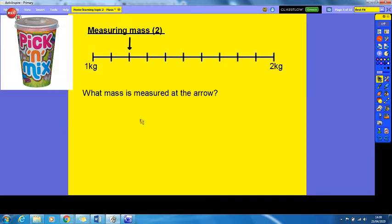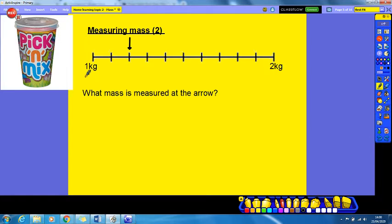So as you can see here, we have our 1 kilogram and we have our 2 kilograms. Now you've got to remember yesterday we said that 1 kilogram is the same as 1000 grams, and so therefore 2 kilograms will be the same as 2000 grams.